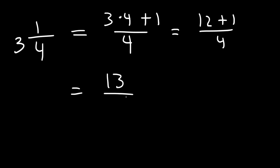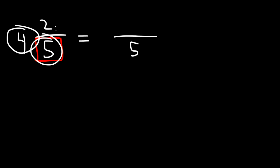So 3 and 1/4 is the same as 13 over 4. Now let's work on another example, 4 and 2/5. First let's rewrite this number, and then the number that goes on top is going to be the multiplication of 4 and 5 plus 2.